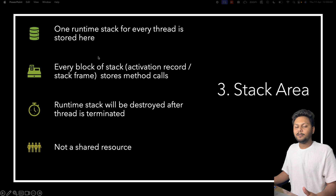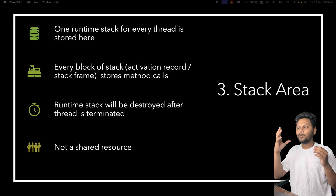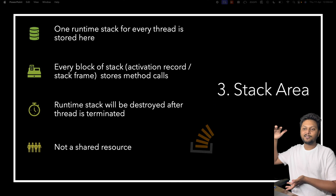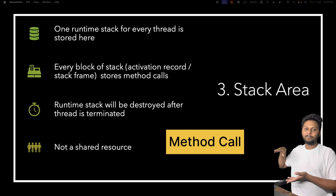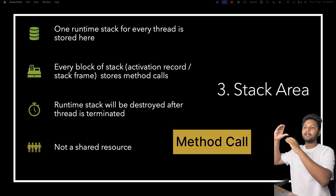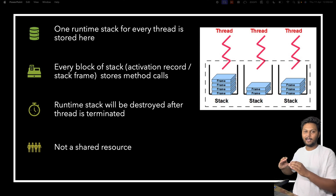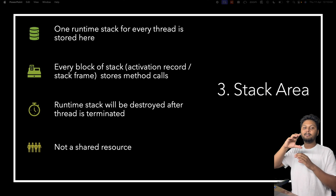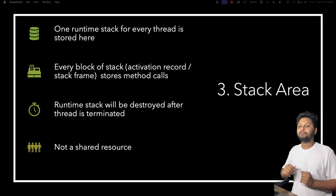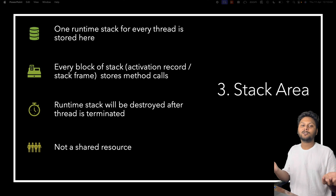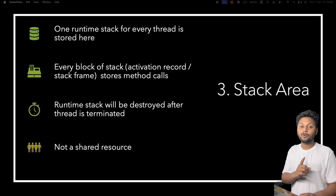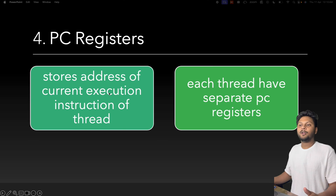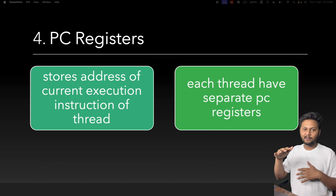The stack area — you may have heard of StackOverflow error, which occurs when this memory is exhausted. For each thread in a Java program there is one stack created. Each cell of the stack is called an activation record or stack frame. If you call method A which internally calls method B, both A and B are stored on the stack. The stack is destroyed once the thread is terminated. It is not a shared resource.